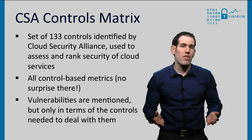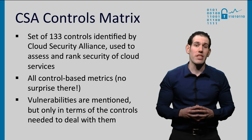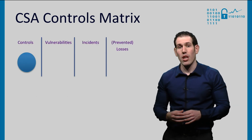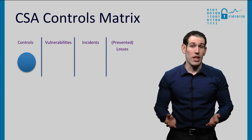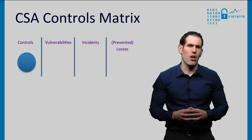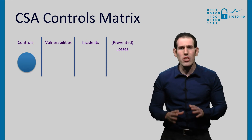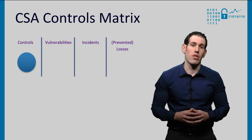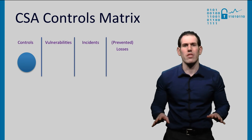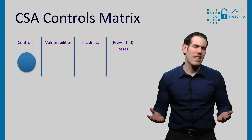Some metrics mention vulnerabilities, but only in terms of the controls needed to deal with them. So, if we map the CSA matrix onto our framework, it is based exclusively on controls. It completely ignores the threat environment or any actual attack data.